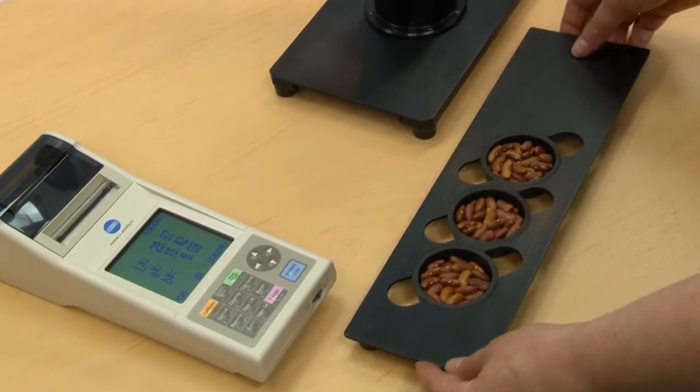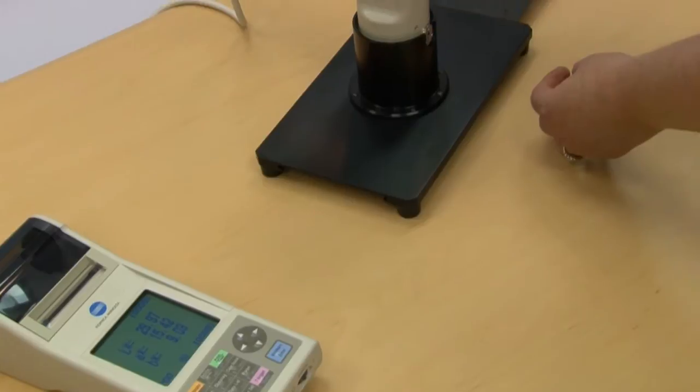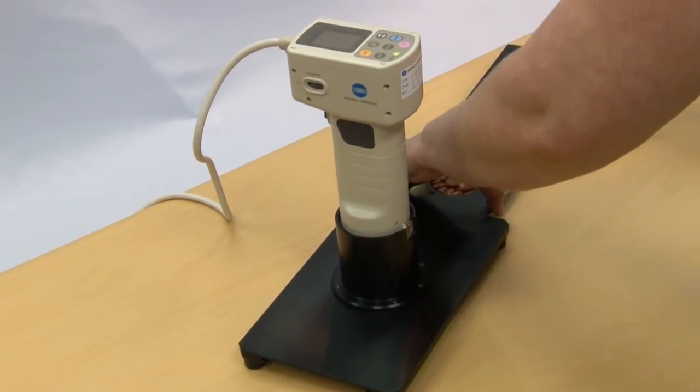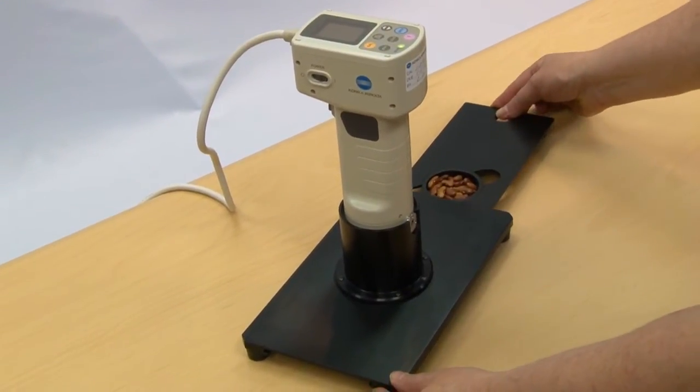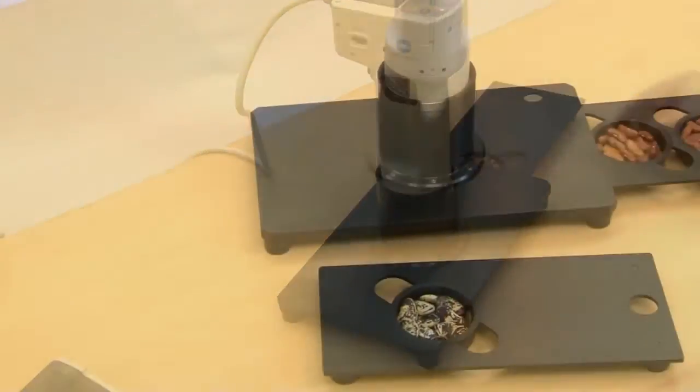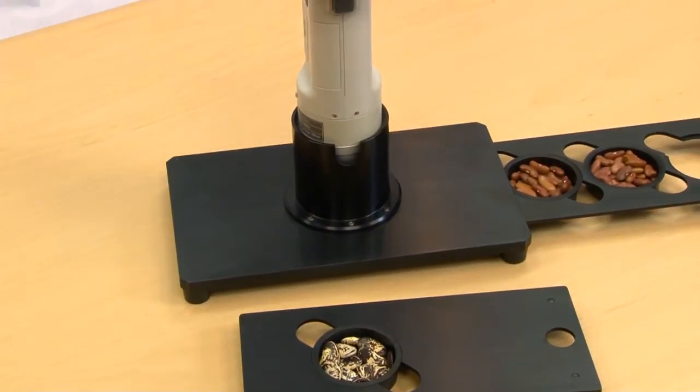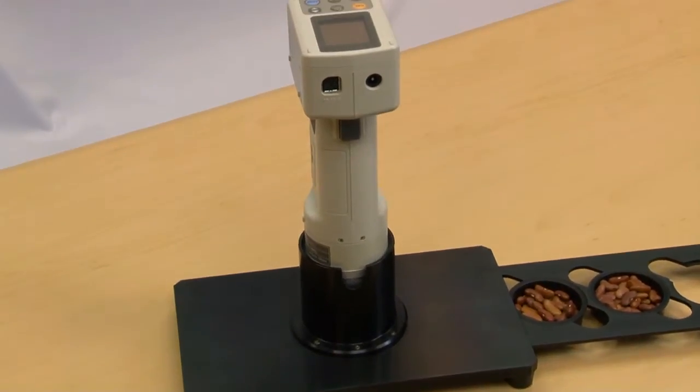The CR410 sample holder can be used with fine powders, granulars, as well as large samples such as beans shown here. This holder is not recommended for liquids. This has a single-cup sample holder or a multi-cup holder, which holds three cups.